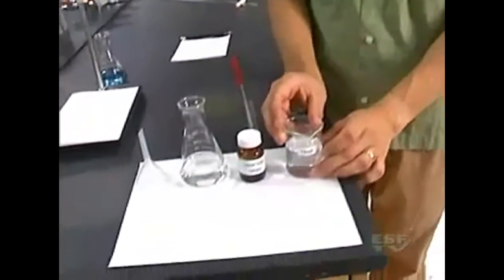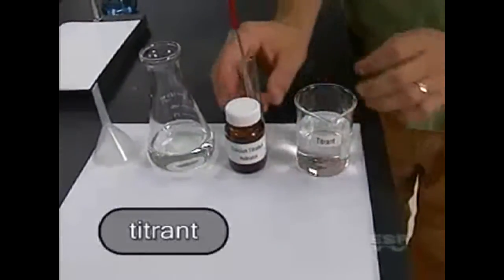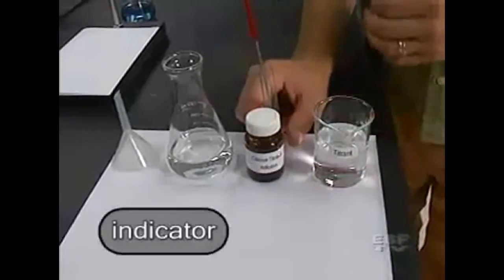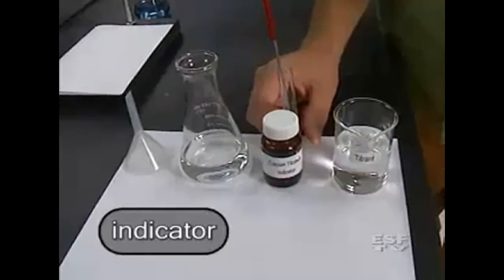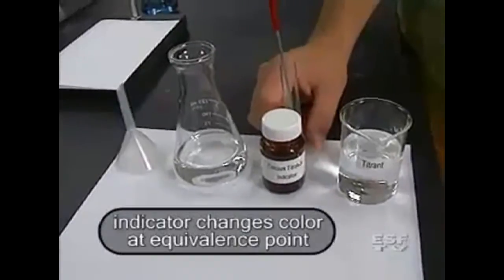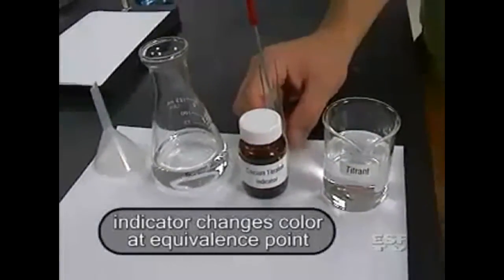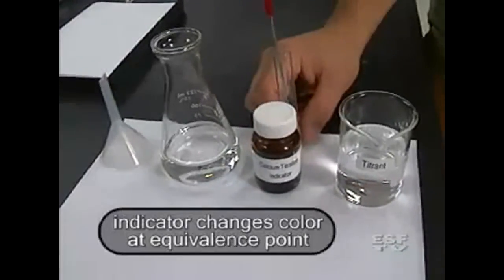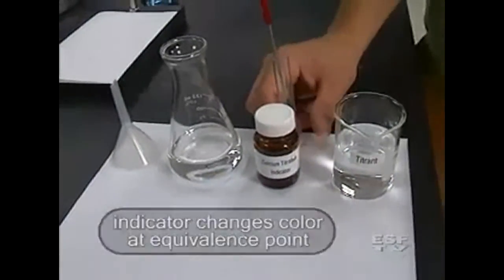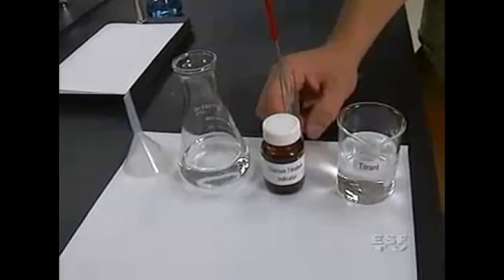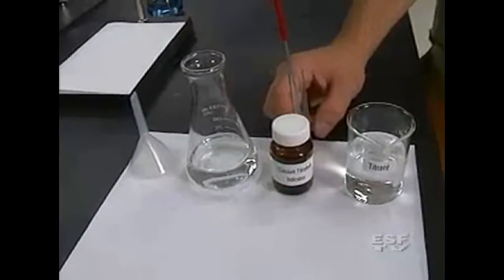Now the reagents I'm going to be using in the lab are the titrant, which is going to go into the burette, the indicator, which is going to change colors when we've reached our equivalence point. When we do a titration, typically the titrant and the solution we're titrating aren't going to change color at all. So we need some sort of cue to tell us when we've gotten to that point, and that's what the indicator is for. In this case, our indicator is going to turn from pink to blue.